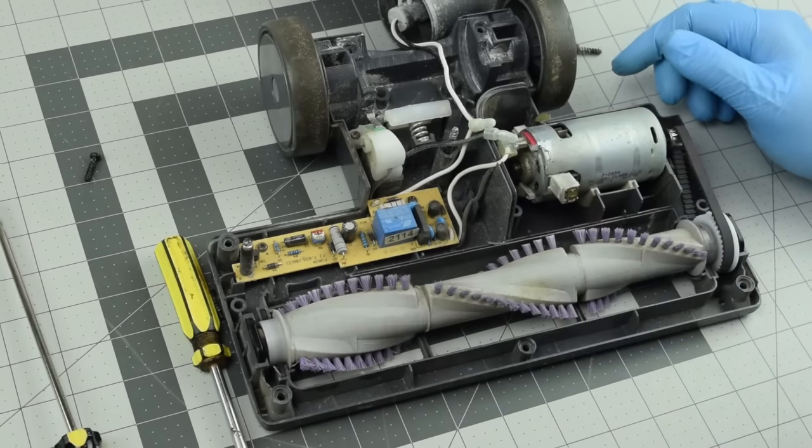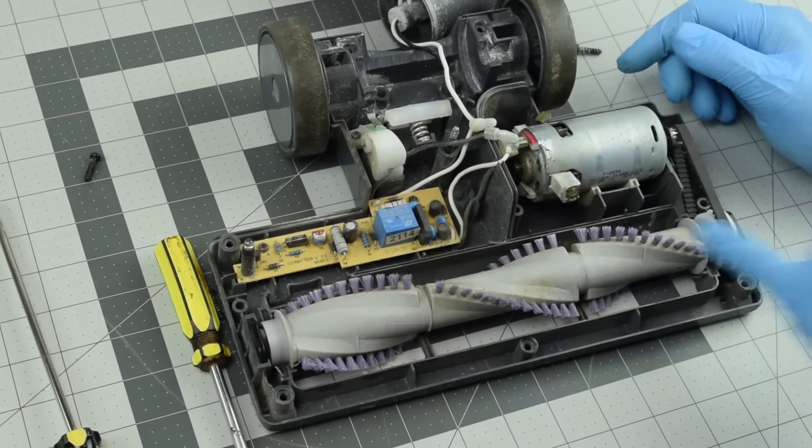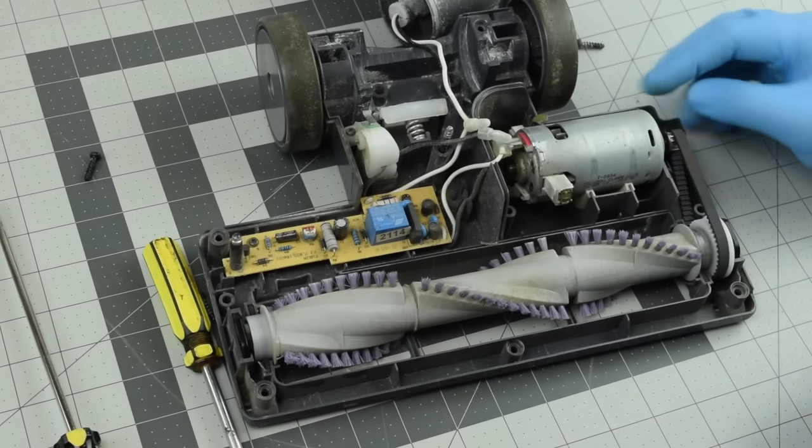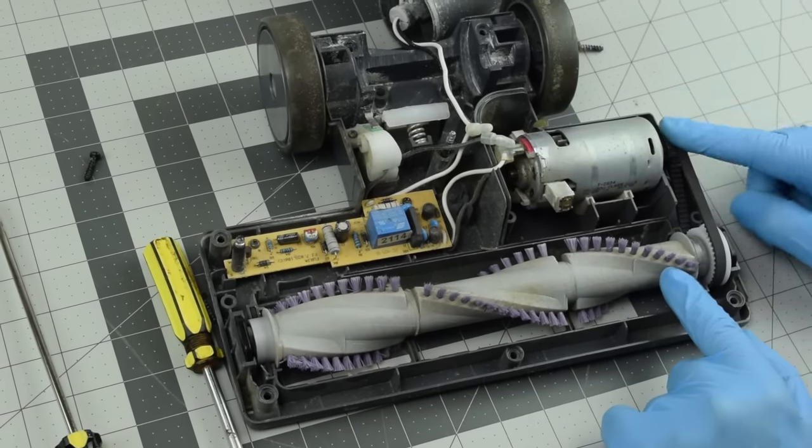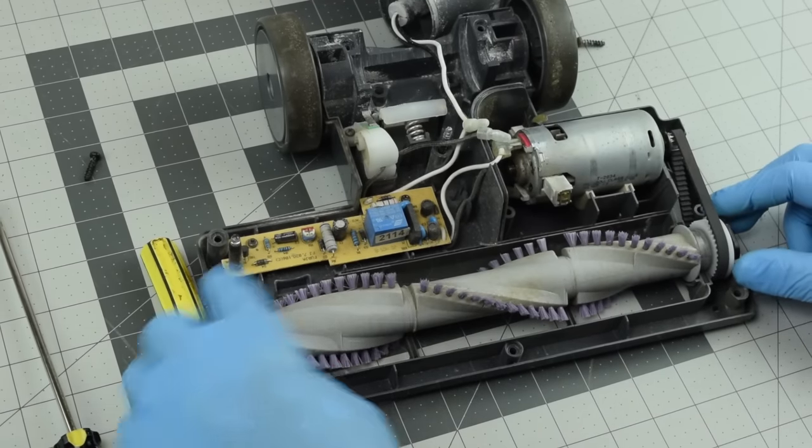Alright, once you take the cover off, one of the more common things that people do is change out the brush or do some maintenance on the belt. So we'll show you how to do that. The easiest way to get this off here is not to try to pull it off or do anything, it's actually very easy.